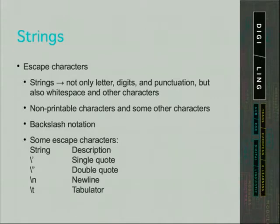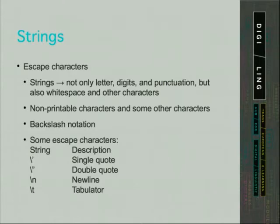Strings are not only letters, digits, and punctuation — they also include whitespace like spaces or newlines, and other characters. Escaped characters are non-printable characters and some special characters; in Python they use backslash notation. For example, if you use double quotes to open a string, you can include a double quote inside the string by writing backslash double quote. You can add a newline by writing backslash n, and a tab by writing backslash t. There are other escape characters in Python — this is not an exhaustive list.